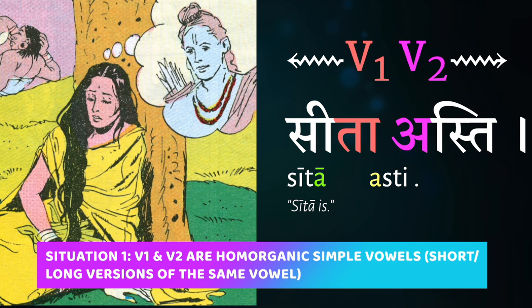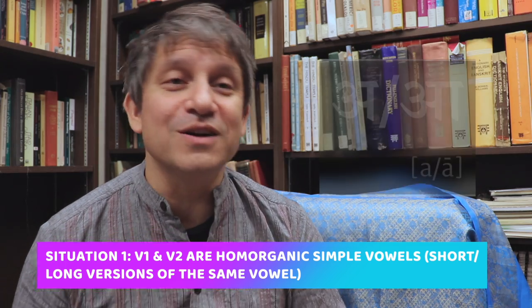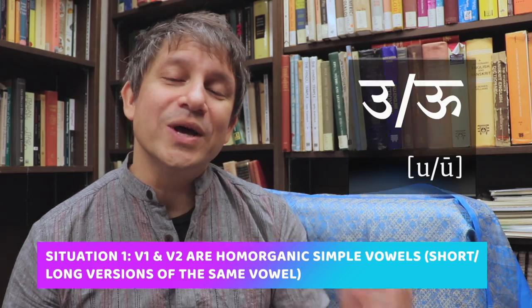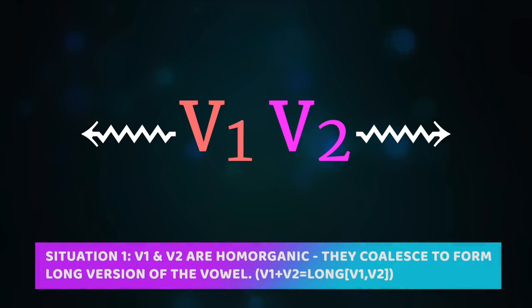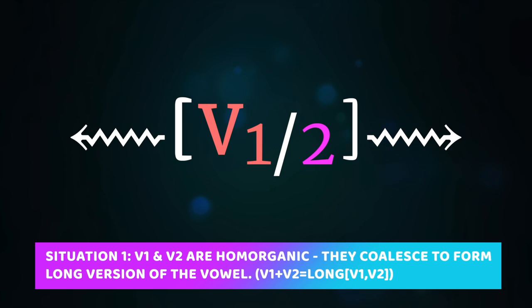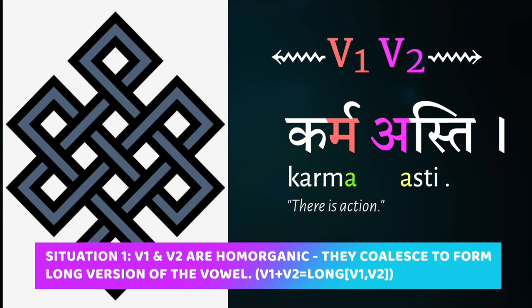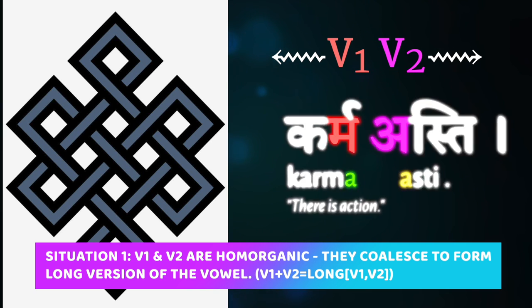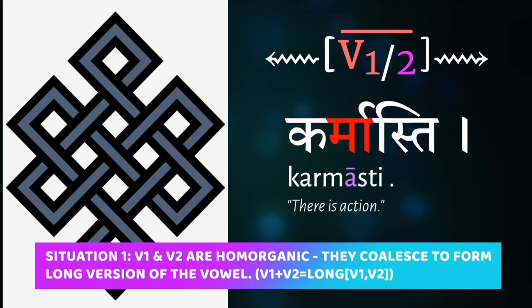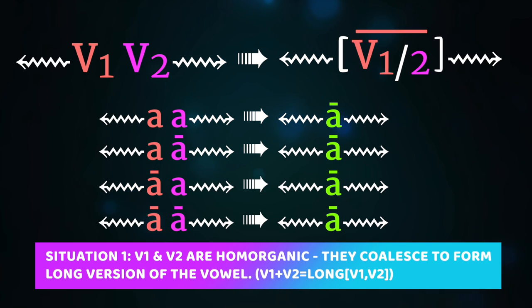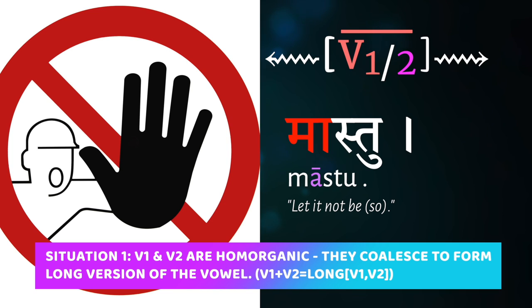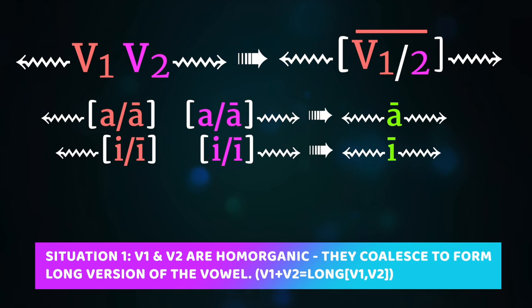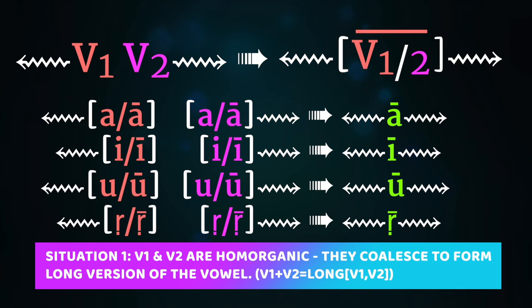The easiest situation is when V1 and V2 are either the same vowel or the long and short versions of each other — what linguistics calls homoorganic vowels. The basic rule is that they coalesce or merge together to form the long version of that vowel. So short a followed by short a, or any combination of short and long a, fuse together to become the long ā. The same applies to long and short i, long and short u, and long and short vocalic ṛ.